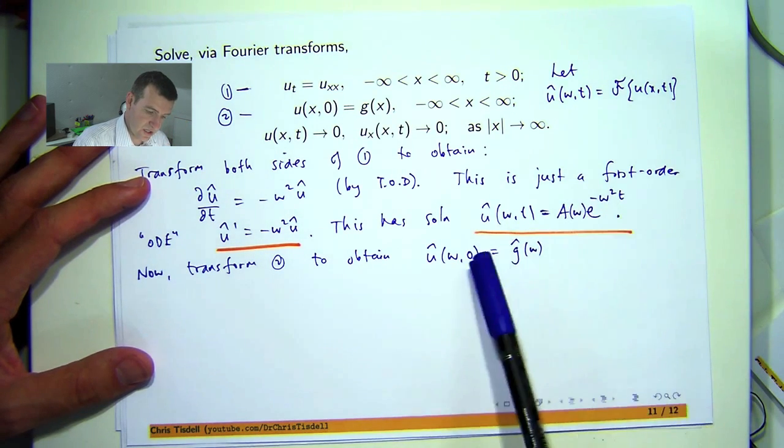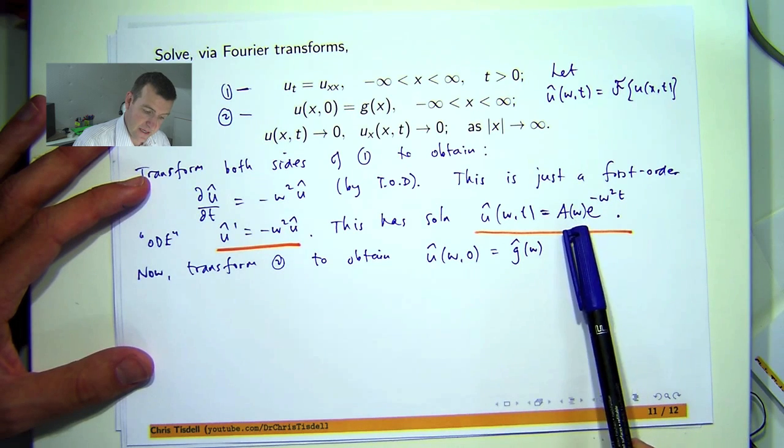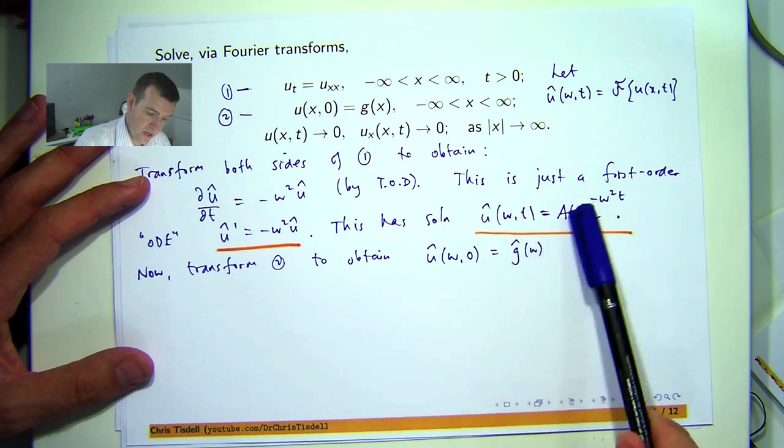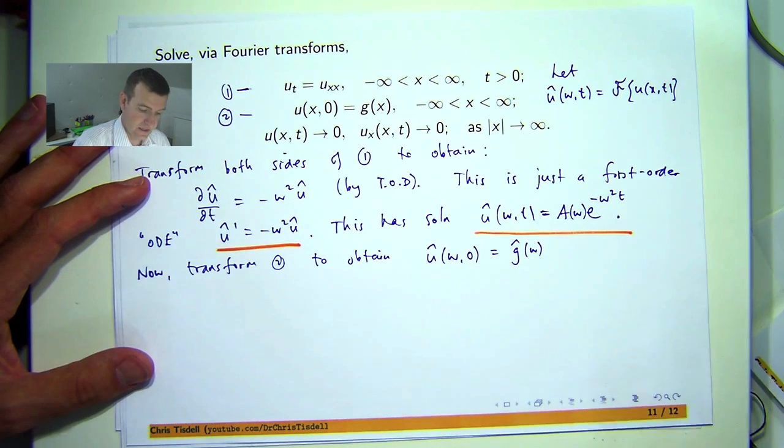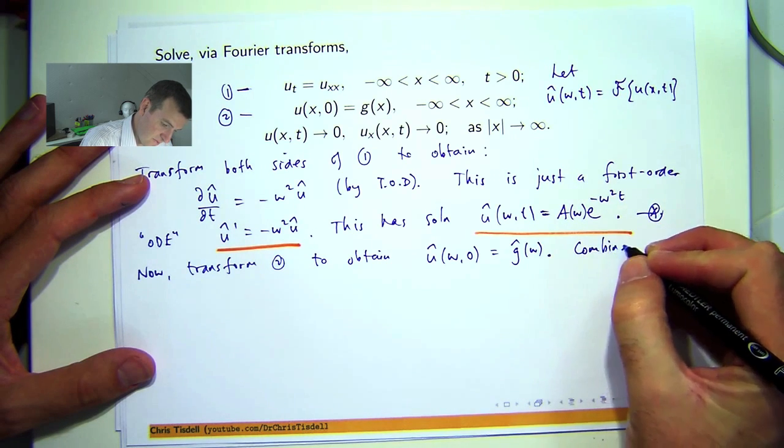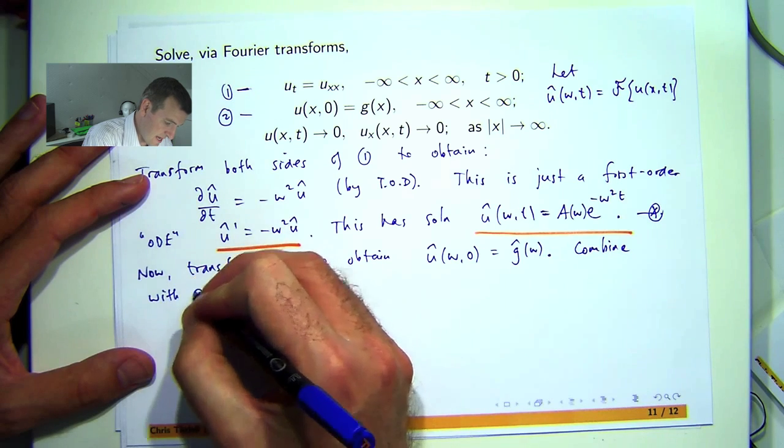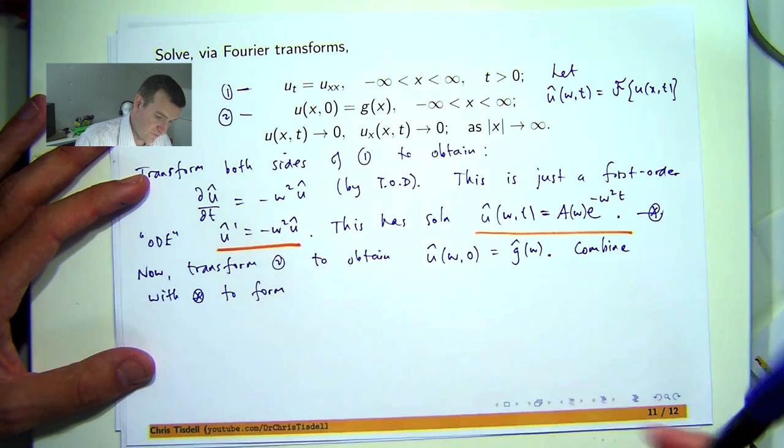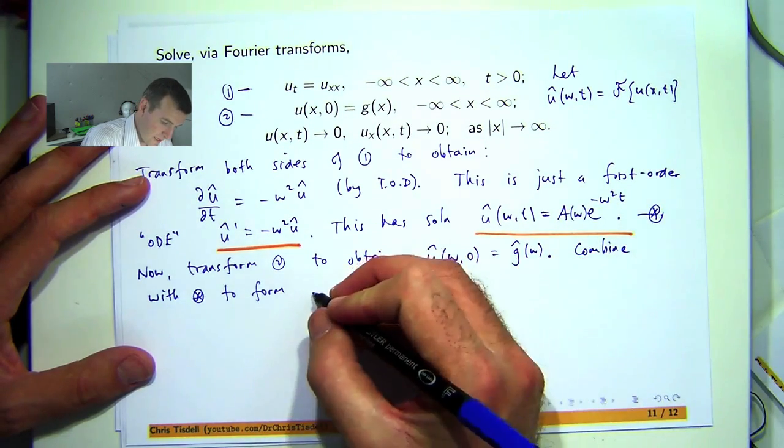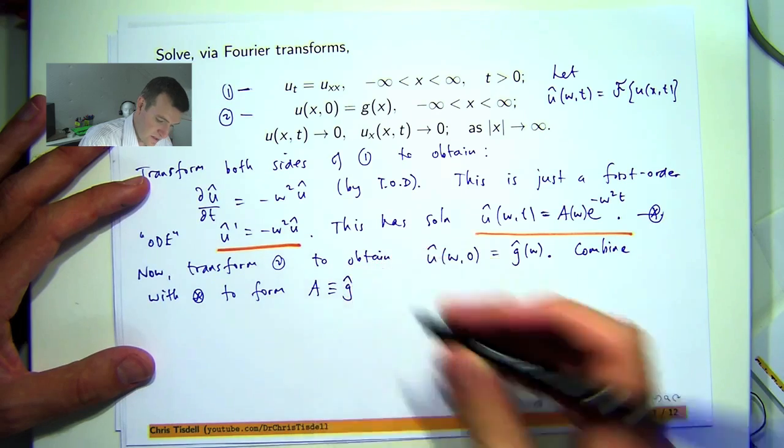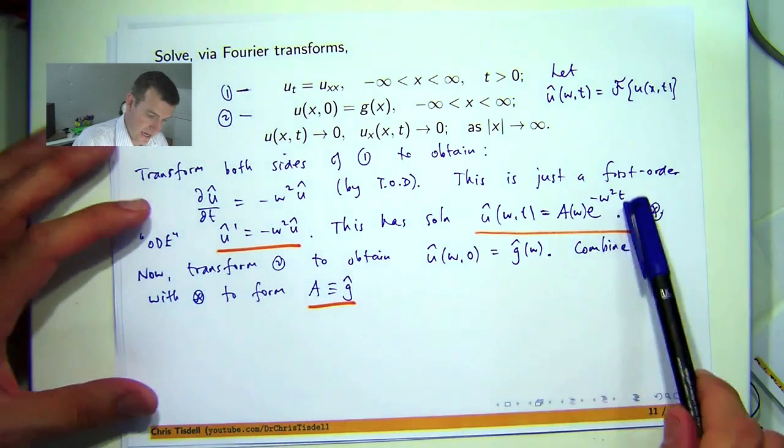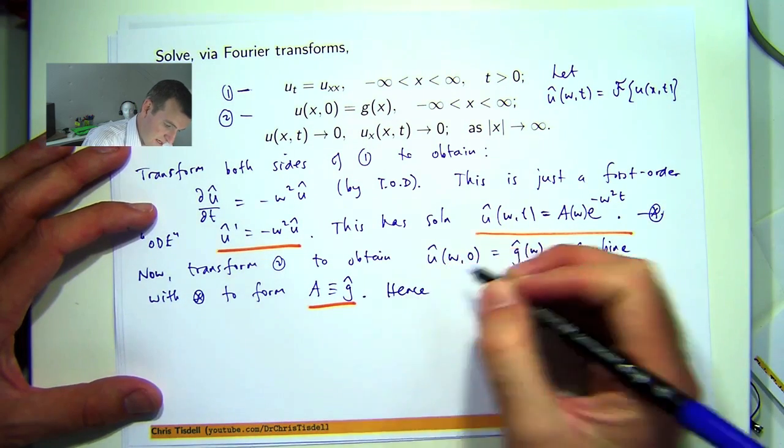So I have this general solution, I want to refine it by computing a, and I have this initial condition. So if I go up here and plug in t equals zero, I know this has got to equal g-hat. So let's call this star, so let's combine with star. Well, if t equals zero, that term's going to disappear, and I'll be left with a of w, and that's got to equal g-hat. So a is identically equal to g-hat.